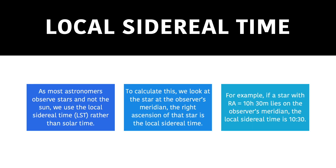As most astronomers tend to observe the stars and not the sun, we tend to use local sidereal time over solar time. Solar time is what we use as a society in basing our activities, but local sidereal time helps us predict the place and locations of stars in a more accurate and easy way. To work out the local sidereal time, we look at a star which is exactly on the observer's meridian. If we know the right ascension of the star, we can say that the right ascension of that star is equal to the local sidereal time.